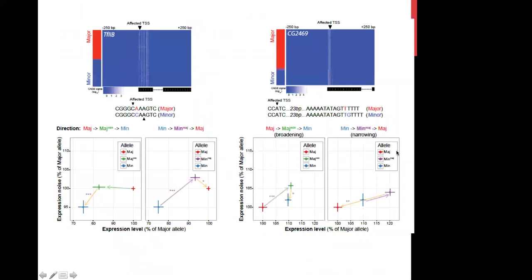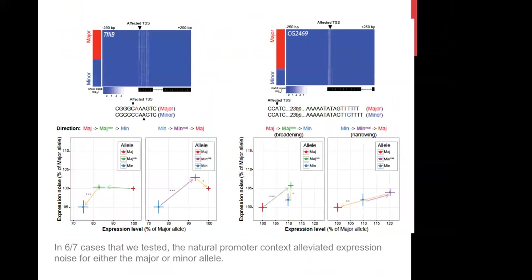Looking at other examples, in six of seven cases the orange arrows point downward, showing that recovering the natural haplotype reduces noise levels. The mutant haplotypes — where the association between the shape-changing variant and neighboring variants is broken — always have higher noise than the natural haplotypes. So shape-changing variants can exacerbate expression noise, but the neighboring variants in the natural haplotype buffer this noise increase.